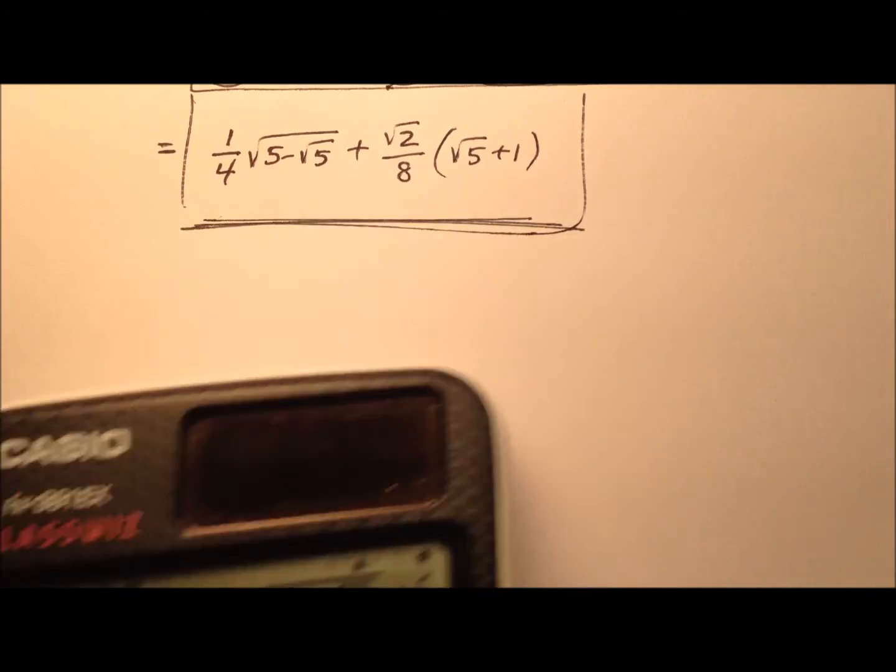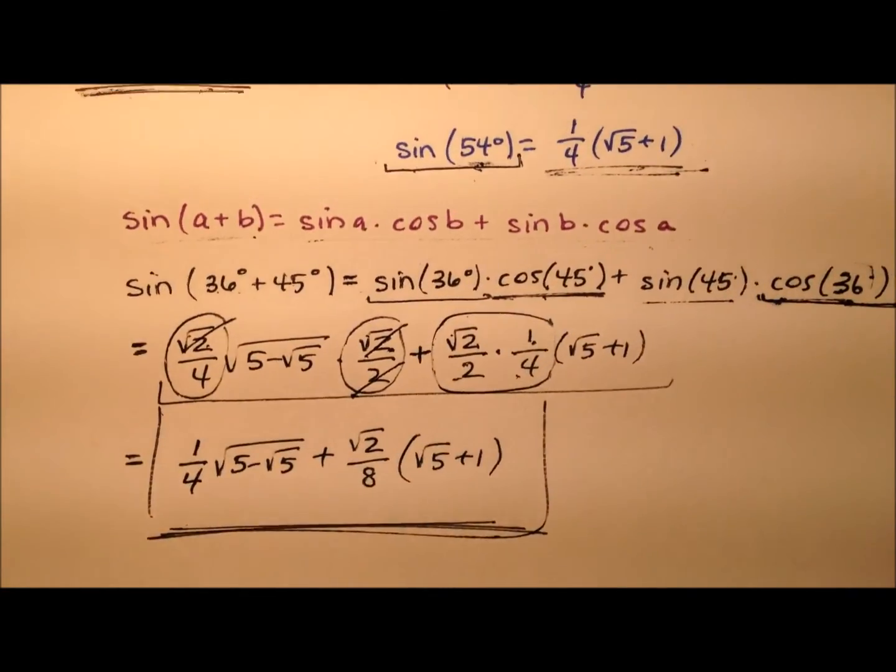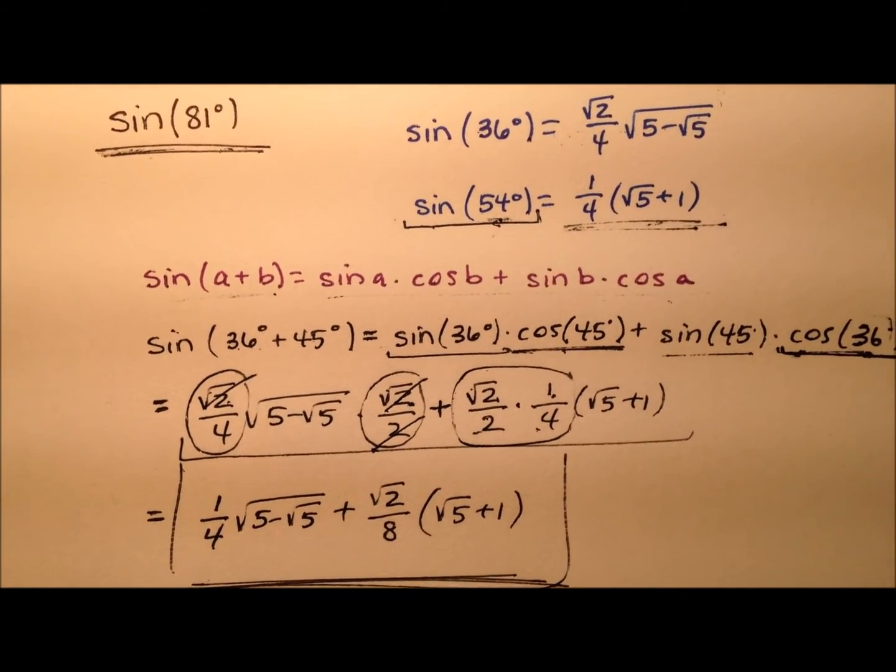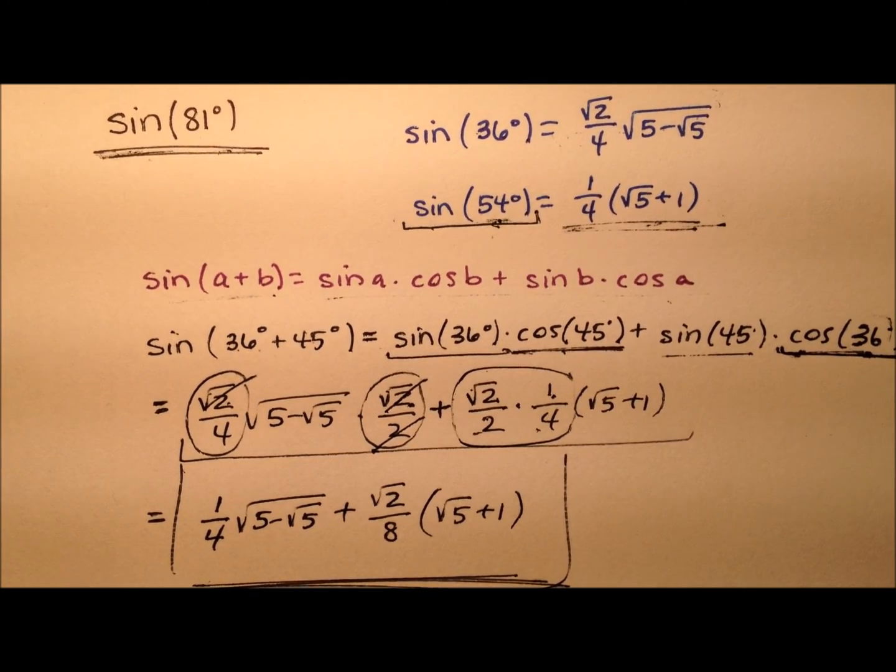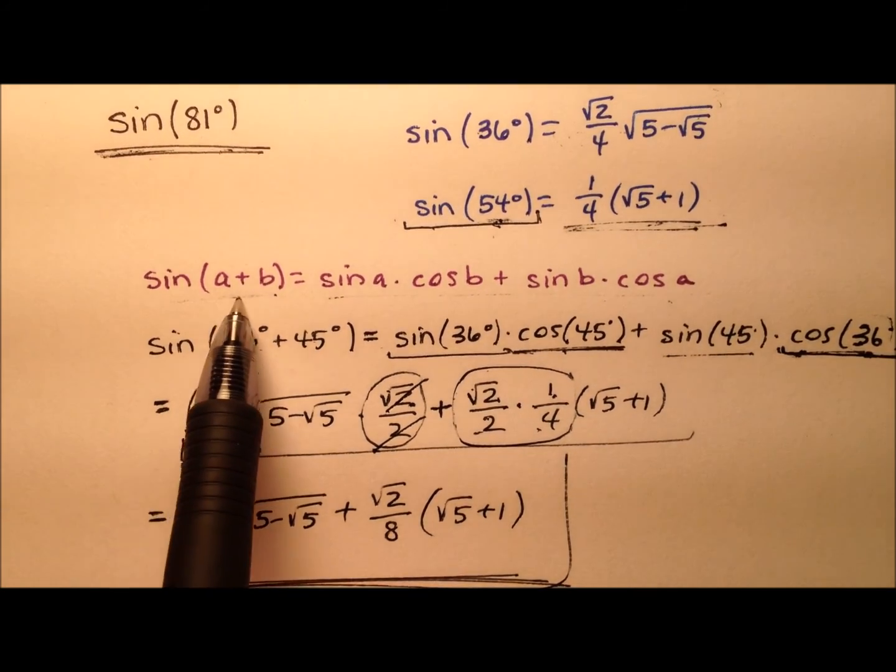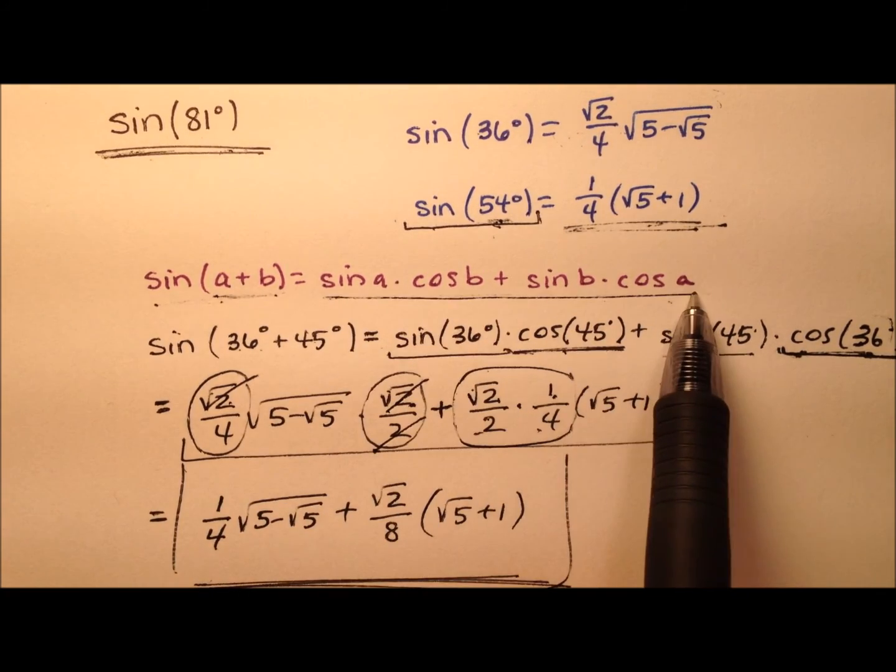So, now we have found the exact value for the sine of 81 degrees, and we did so by using the sum identity for sine here and this expansion.